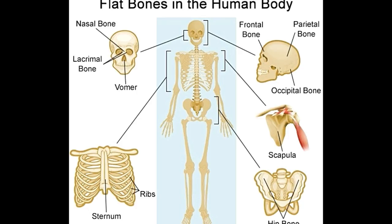Flat bones are important as these not only protect vital organs and tissues, but also provide a large surface area for ligament and tendon attachment. Moreover, the spongy bone tissue that is located between the layers of tough compact bone tissue also contains red bone marrow.